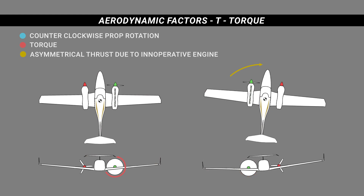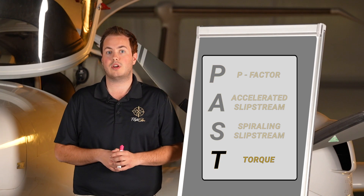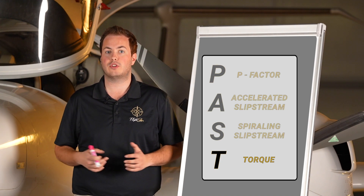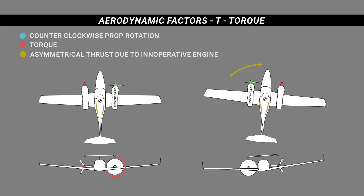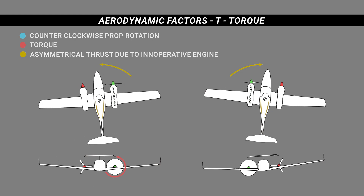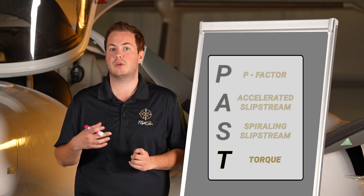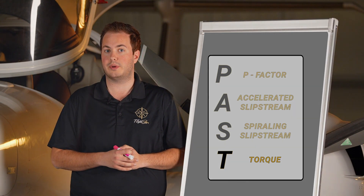Banking into the operating engine helps with engine failures when you go through your training. Versus if the right engine was working and the left one wasn't, you have asymmetrical thrust yawing you to the left, and in addition, because of the torque moving to the left, that's going to roll you to the left. So once again, we're not going to want to lose the left engine because the right one is going to be harder to deal with.